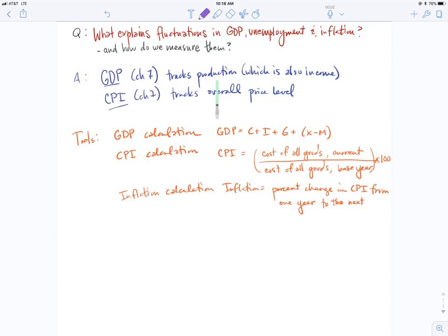The tools in that chapter are the GDP calculation, which we've been over, and the CPI calculation. Inflation is found as the percent change in the CPI from year to year.